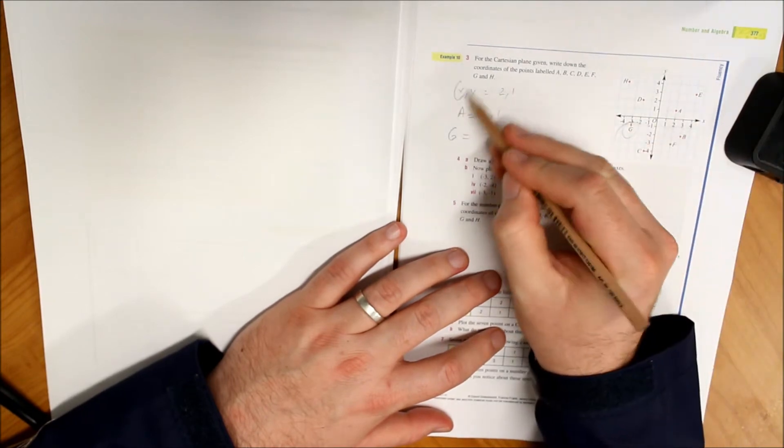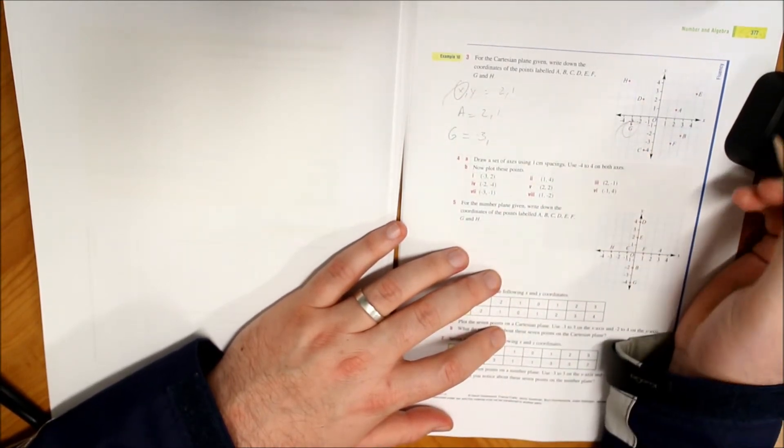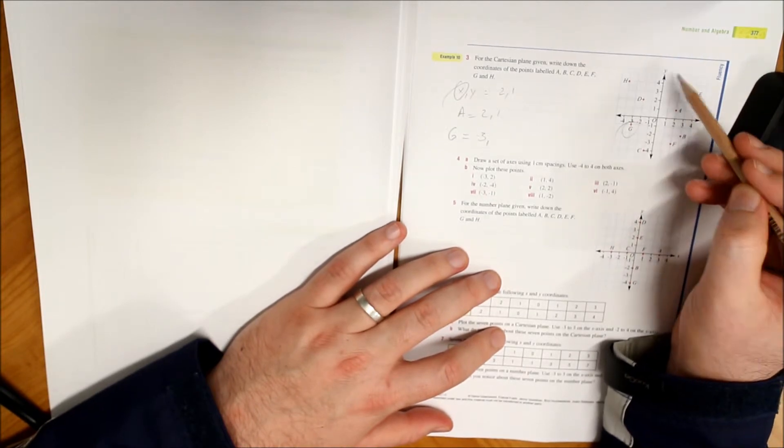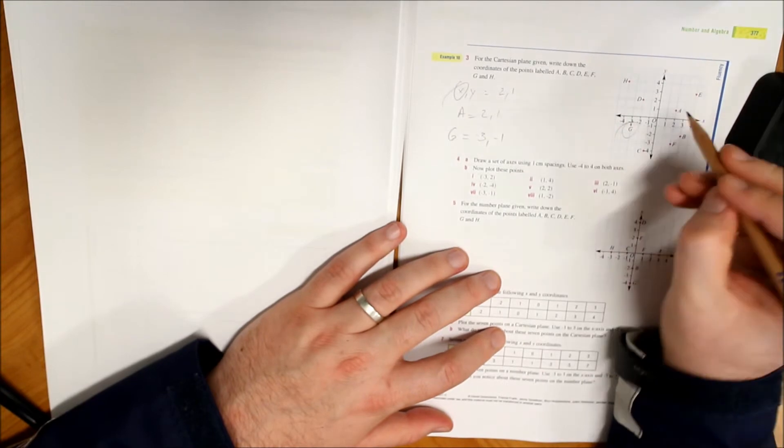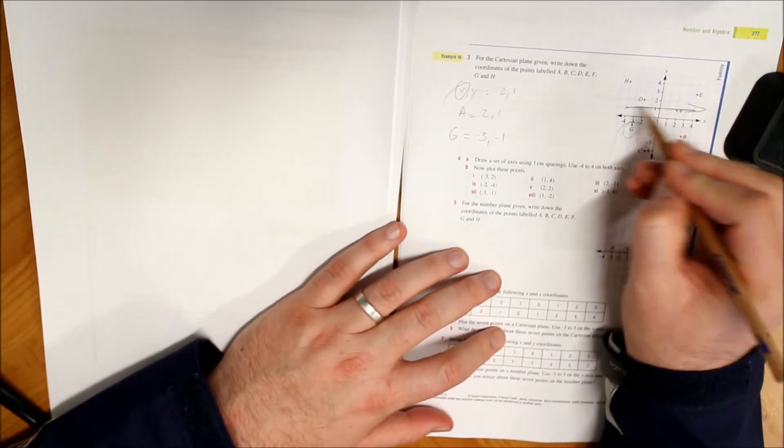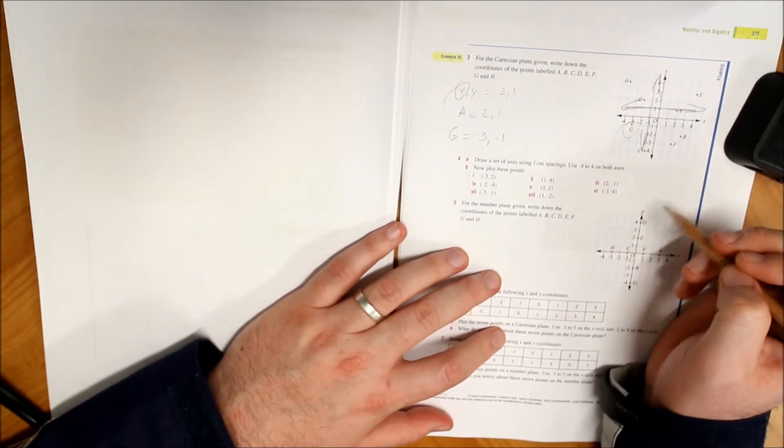G, we need to do our x coordinate first, is negative three. And our y coordinate is negative one. Okay, so going across first and then up and down second. All right.